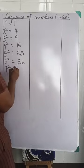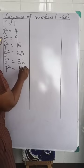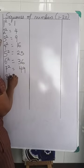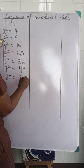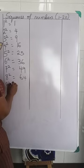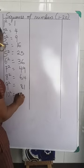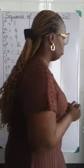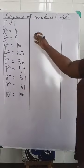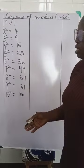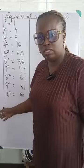7 squared, 49. 8 squared, 64. 9 squared, 81. 10 squared, which is 100. Can we see it? We'll have a basic knowledge of 1 squared to 10, right?